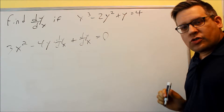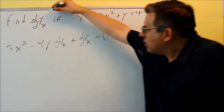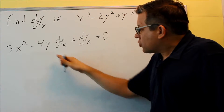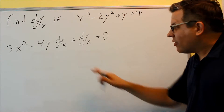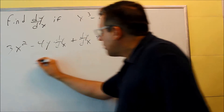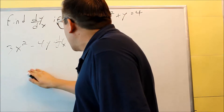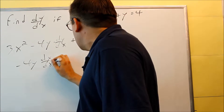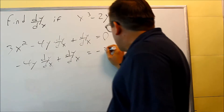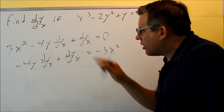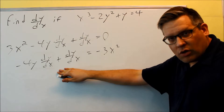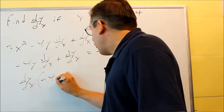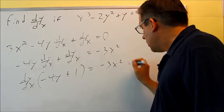Now we've done the derivative of all four terms. The next thing is to isolate dy/dx, because that's what they're asking for — we've got to solve for it. Treat dy/dx like a variable. Leave the terms that have dy/dx on one side; move everything else over. The 3x squared goes across and becomes negative 3x squared. So we have: negative 4y times dy/dx plus dy/dx equals negative 3x squared. We're going to factor out dy/dx since it's a common factor, giving dy/dx times (negative 4y plus 1) equals negative 3x squared.